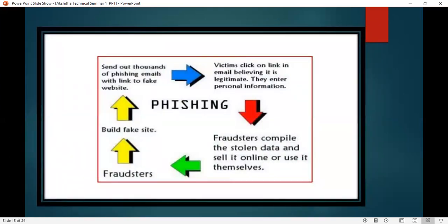Fraud setters carry out phishing by building a fake website and sending thousands of phishing emails with a link to that fake website. When a victim clicks on the link in the email, they are taken to the fake site and enter their personal information. Fraud setters then compile the stolen data and either sell it online or use it themselves.